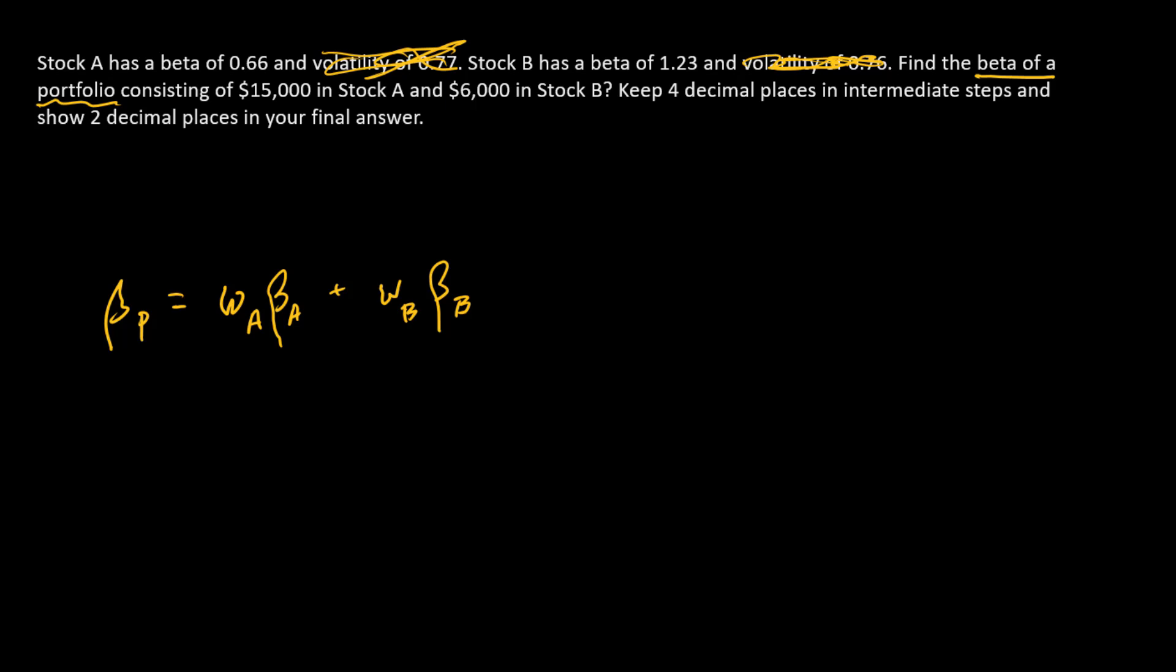Next, we need to come up with the weights. Remember that the weight in a component is just the dollars invested in that component divided by the total dollars of the portfolio. So weight for A is $15,000, the dollars in A, divided by $15,000 plus $6,000 or $21,000. That's the total dollars in the portfolio.